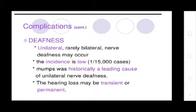Deafness as a complication: Unilateral or bilateral nerve deafness may occur. The incidence is low — 1 in 15,000 cases. Mumps was historically a leading cause of unilateral nerve deafness. The hearing loss may be transient or permanent.